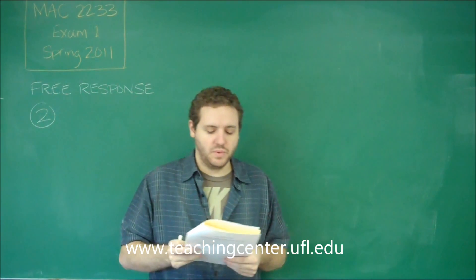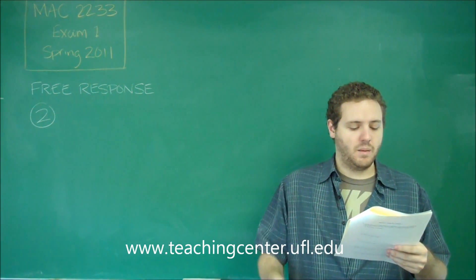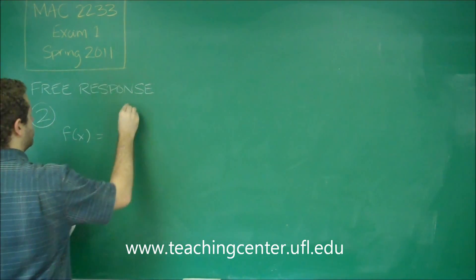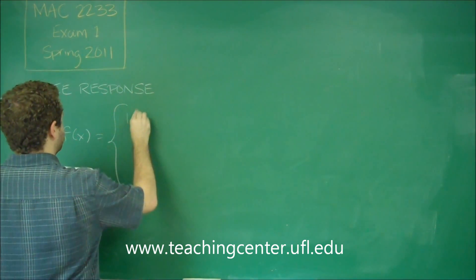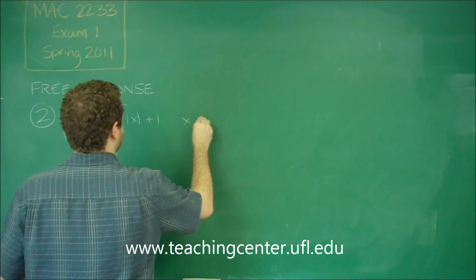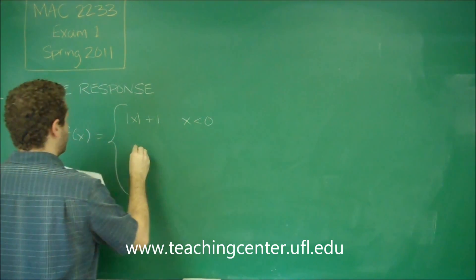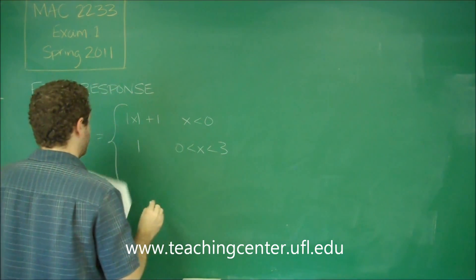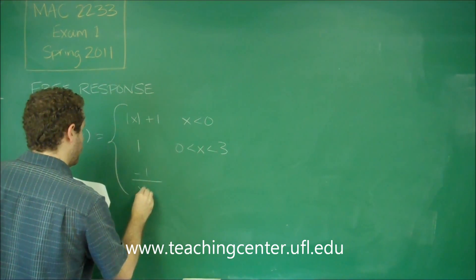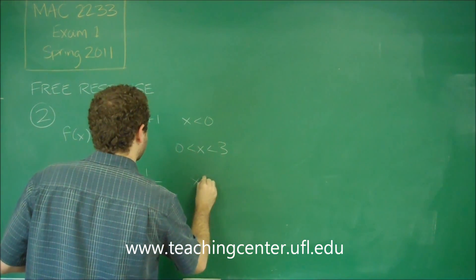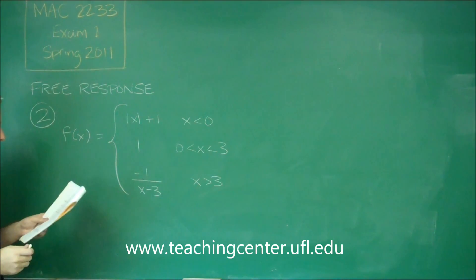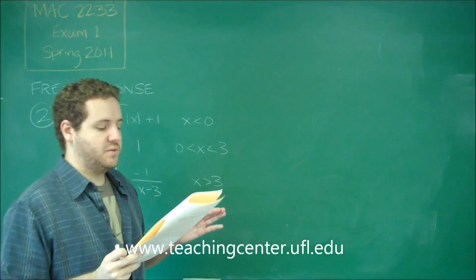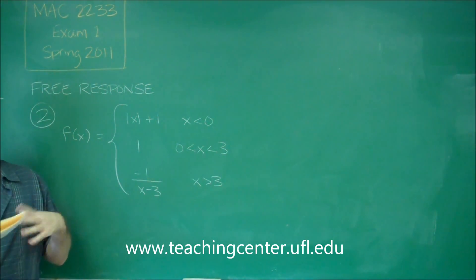So number two, we have a piecewise function where we're asked to evaluate a bunch of different limits. Our function is: absolute value of x plus one for x less than zero; just the function one if x is between zero and three; and negative one over x minus three if x is greater than three. We need to find limits at zero from the left and right, zero itself, three from the left and right, and three itself.